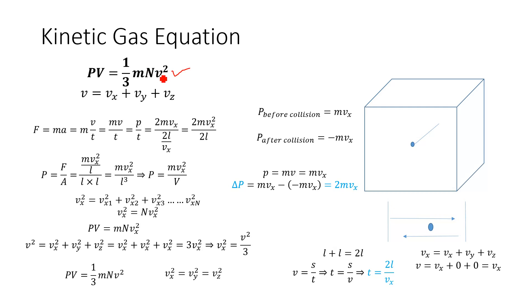We know that gases are composed of a large number of small particles known as molecules, and these molecules are continuously in random motion. Each molecule carries a certain amount of momentum and kinetic energy, and when they strike the walls of the container, they exert pressure. The kinetic gas equation relates pressure, volume, mass of the molecule, number of molecules, and their velocities.